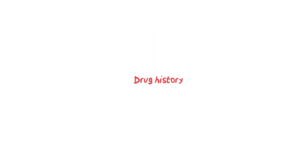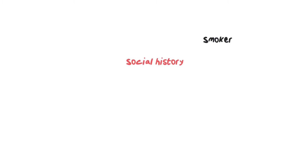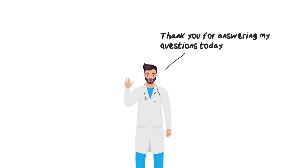Moving on to drug history: ask about the combined contraceptive pill and calcium channel blockers, which may cause leg swelling, and ask about allergies. For social history, ask about smoking, alcohol intake and how many units, and you can also ask about occupation, diet, and lifestyle to dive into relevant social history — you'll get some extra points for that. Close the consultation by thanking the patient and moving to the next step.